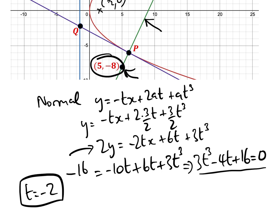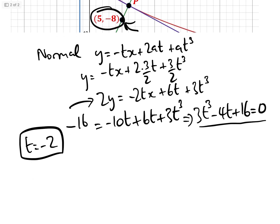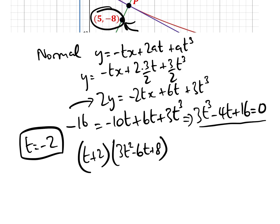Normally we can solve by inspection, and indeed t = −2 works here. If you can't solve by inspection, we can factor out (t + 2), giving (t + 2)(3t² − 6t + 8) = 3t³ − 4t + 16.